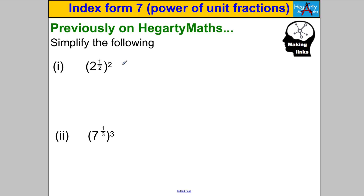Previously on Hegarty Maths, in the power of a power video, you worked out that two to the half, all squared, is two to the half times two, which is simply two to the one, which is two. And seven to the third, all cubed, equals seven to the third times three, which is seven to the one — the answer being seven. Now I haven't told you what two to the half or seven to the third actually mean, but assuming they exist, you can multiply the powers and get the right answer.